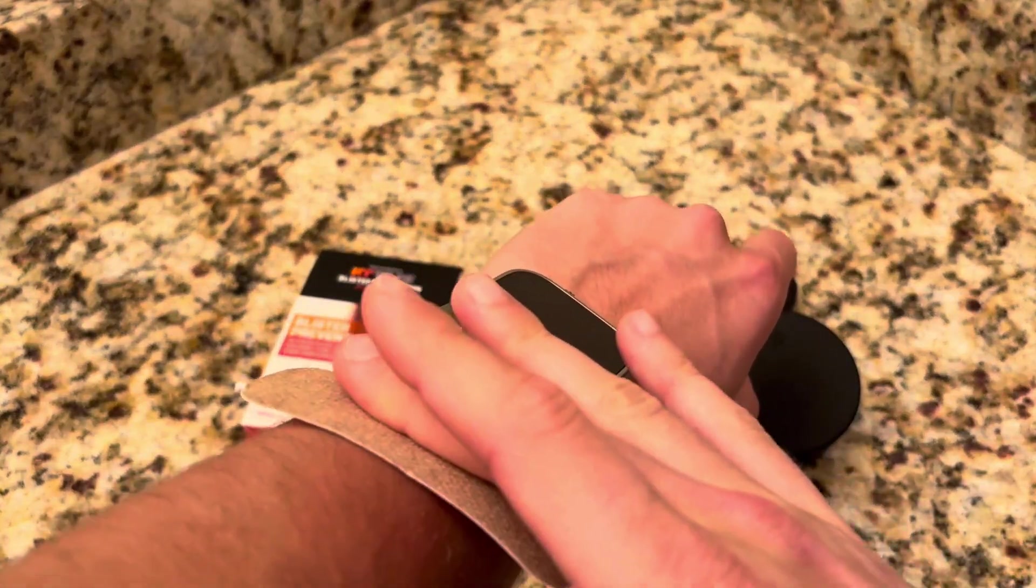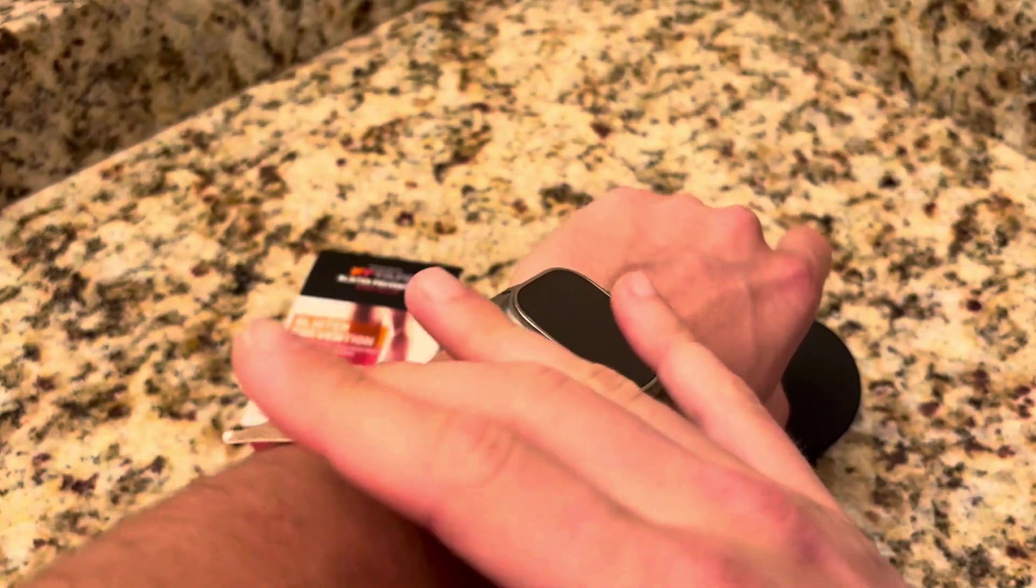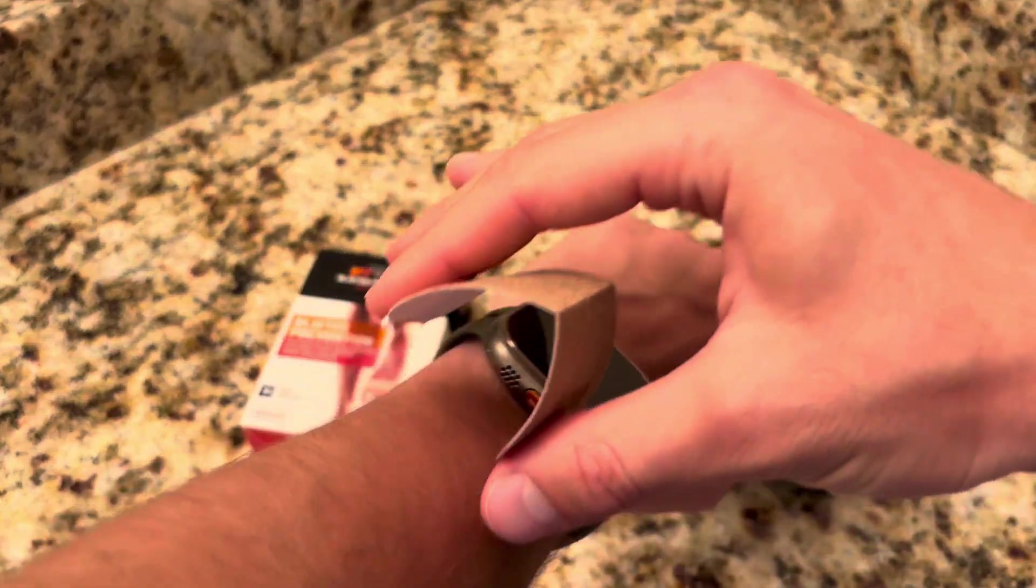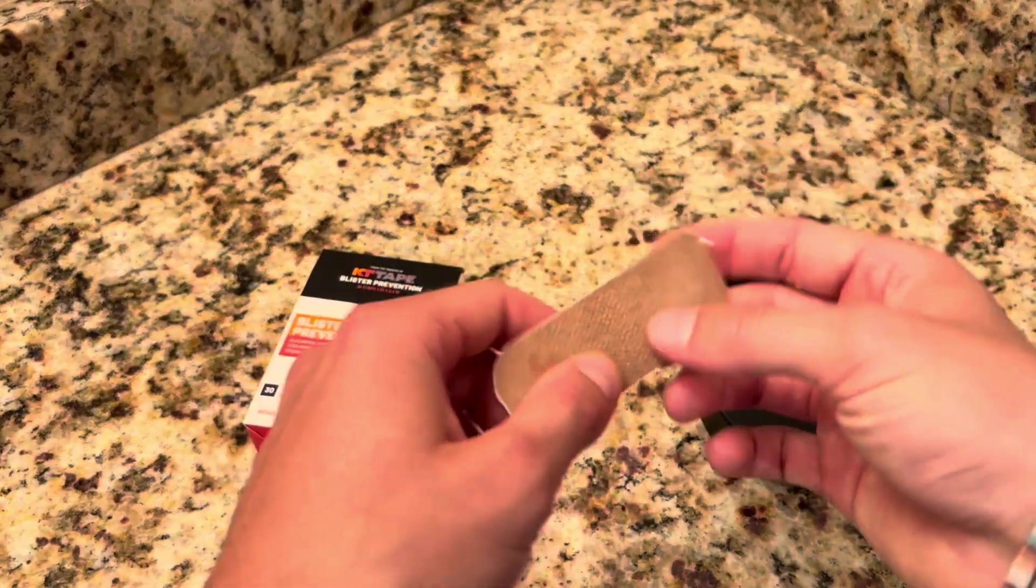There's ways you can prevent that, but what you may want to do is put one piece on and put a second piece over and maybe even a third piece below, depending upon the spot you're getting blisters on your feet, if that's where you put them. And that will help.